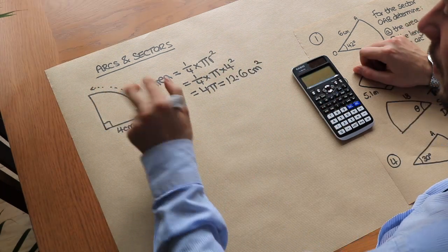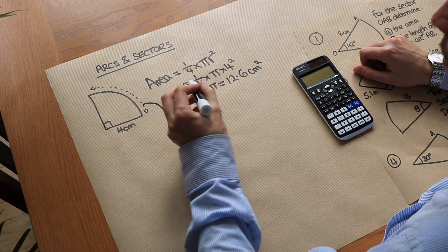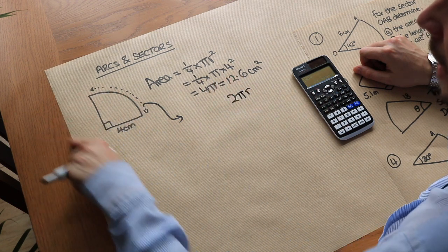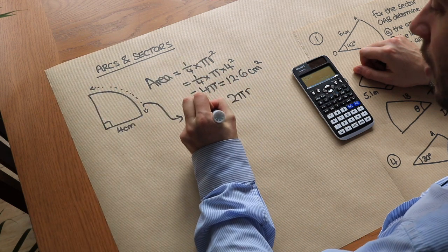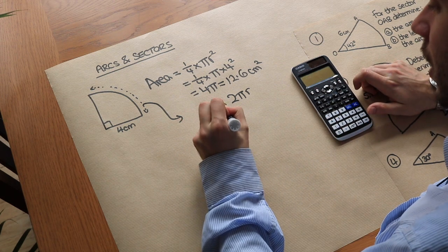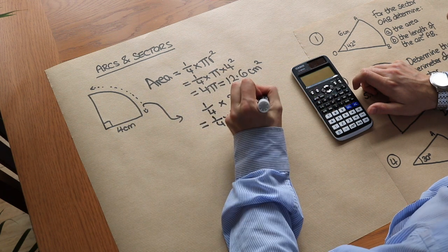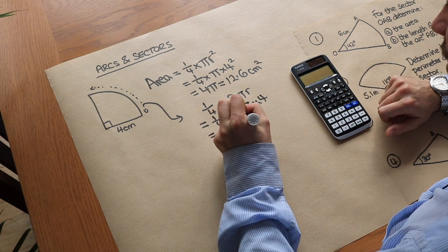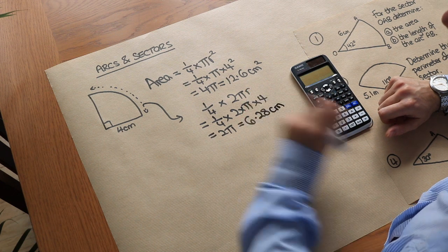If we want the length of this curved line, we start with the circumference of a full circle, which is 2 pi r. We don't have a full circle — we just want a quarter of it. So that would be a quarter times 2 times pi times the radius of 4, giving us 2 pi, which as a decimal is 6.28 centimeters to three significant figures.